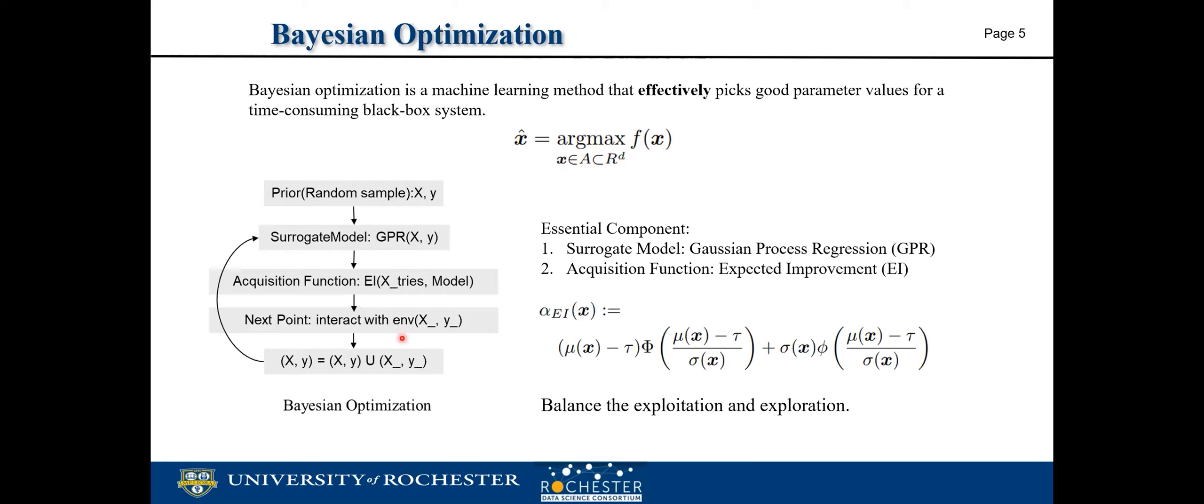This part is a framework of Bayesian optimization. For Bayesian optimization, there are two essential components: a surrogate model and an acquisition function. The surrogate model is used to predict the model performance for specific input parameters, and the acquisition function is used to balance the trade-off process. In this equation, tau is the current best performance, mu x and sigma x are the mean and variance of the predicted performance. This one is a cumulative distribution function, and this one is a probabilistic distribution function. By maximizing the acquisition function, we can find the parameters that have the most expected improvement compared to the current optimal, and the suggestion will be used for the next test.